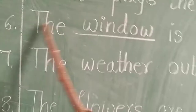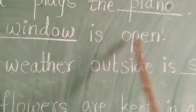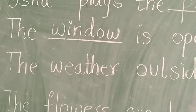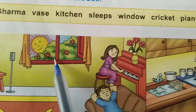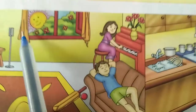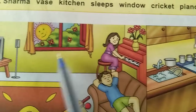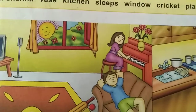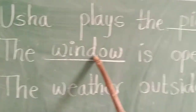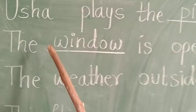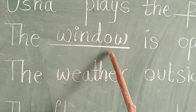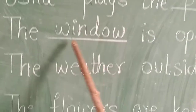Sixth one: The dash is open. In the picture you can see — what is this? Window. So the answer is: the window is open. Spelling: W-I-N-D-O-W, Window.